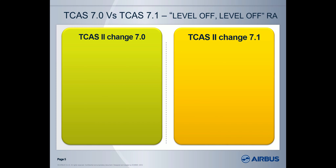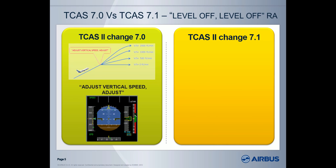What are the main differences between these two standards? With the TICAS Change 7.0, when the TICAS triggers a resolution advisory — adjust vertical speed — it requires the pilot to adjust the vertical speed in order to fly within the green zone of the TICAS vertical speed indicator. For example, the pilot must reduce the vertical speed, but the RA does not clearly say what exactly the maneuver is and does not indicate the sense of the correction, meaning reducing or increasing the vertical speed.